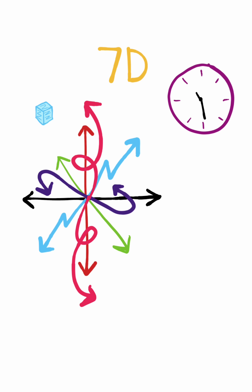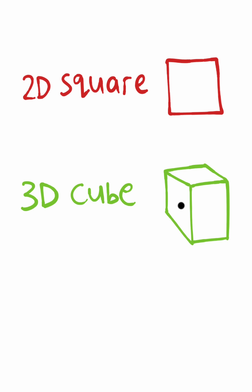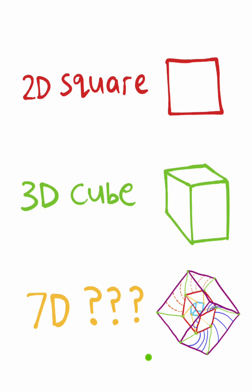And in addition, we would also have entirely new shapes. So just like two dimensions gives us squares and three dimensions gives us cubes, seven dimensions would give us unique shapes that span this new hypervolume.